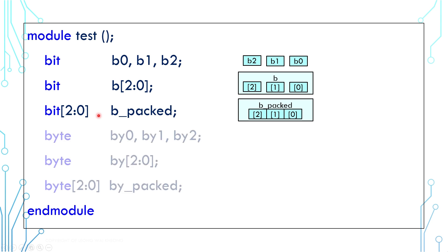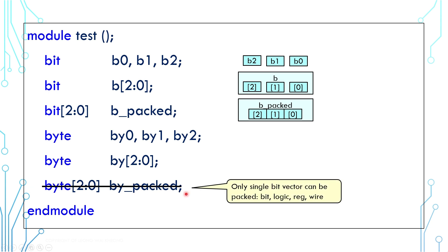The same concept can be applied to other types of variables. The only gotcha is that in this case, byte cannot be packed. Only single bit vector can be packed. For example, bit, logic, reg, and wire.